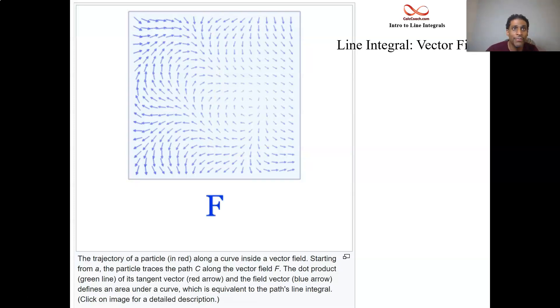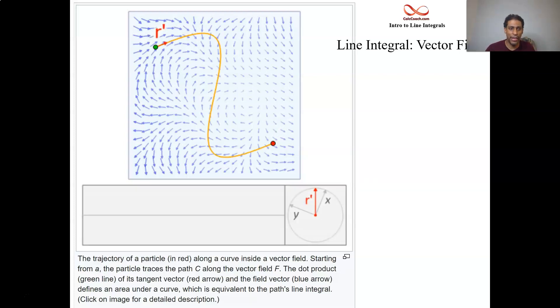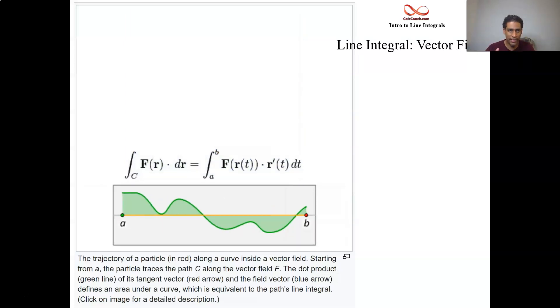As you go down, watch the dot product value be equal to zero as the vectors are orthogonal to the curve.